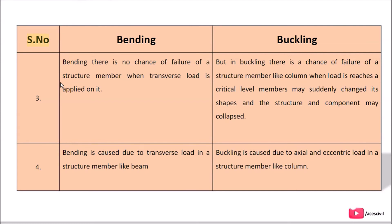Point 3: In bending, there is no chance of failure of a structural member when a transverse load is applied on it. But in buckling, there is a chance of failure of a structural member like a column when the load reaches a critical level — the member may suddenly change its shape and the structure and component may collapse.